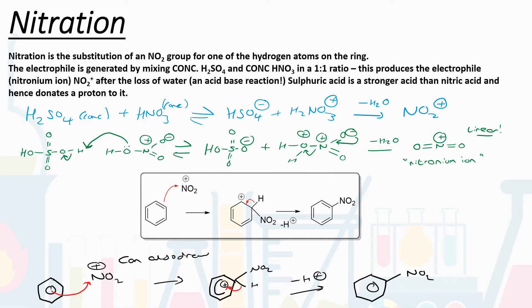The first specific reaction is nitration — substituting a nitro group (NO2) onto one of the carbon atoms on the ring. The electrophile is the NO2+ ion, called the nitronium ion. To make it, we mix concentrated sulfuric acid and concentrated nitric acid in a 1:1 ratio. The sulfuric acid is a slightly stronger acid than nitric acid, so this is an acid-base reaction — sulfuric acid donates a proton to nitric acid, which acts as a base. We form the HSO4- ion and the H2NO3+ ion, and then lose a molecule of water to get the nitronium ion.